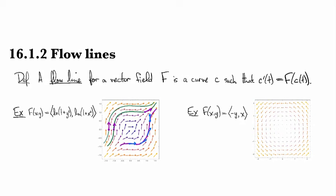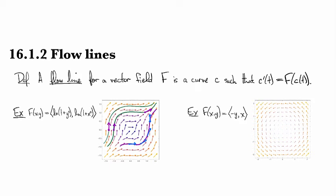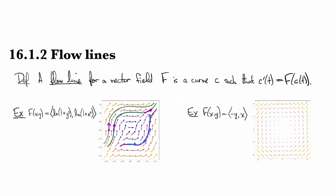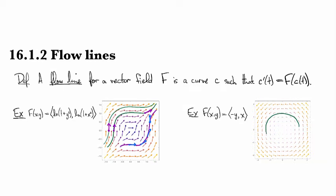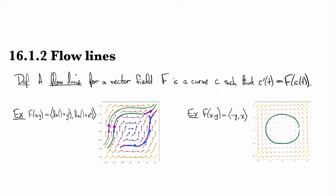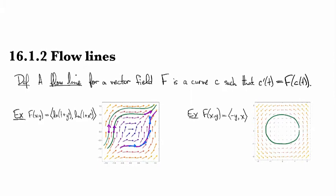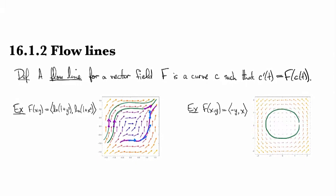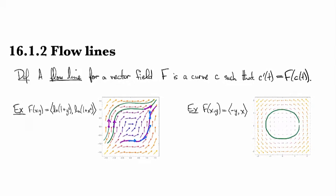Mathematica sort of made a nicer picture here and you can kind of see from this nicer picture that the flow lines look like circles. You might wonder if they're spirals or circles. Definitely when I drew it before they looked a little bit more like spirals. But for this one we can actually compute the flow lines explicitly.